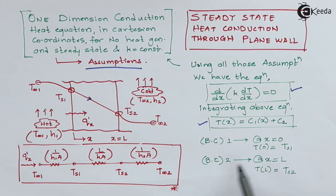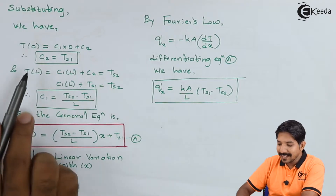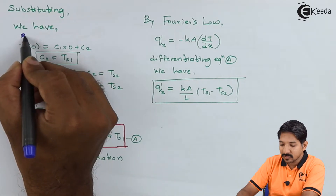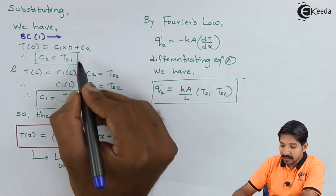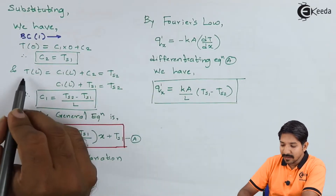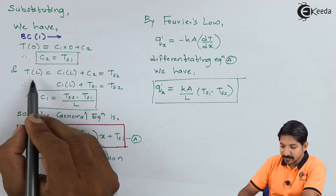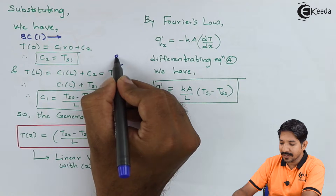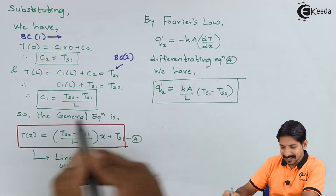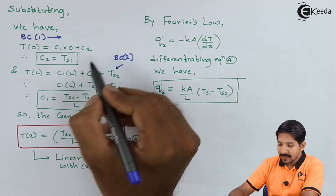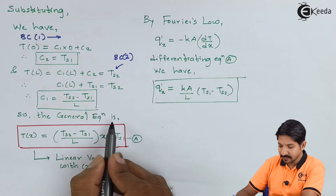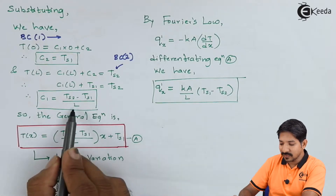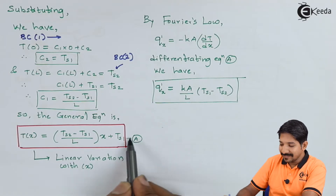I need to put the first and second boundary conditions into the general solution. Substituting boundary condition 1: T(0) = C1·0 + C2, which yields C2 = Ts1. With the second boundary condition: T(L) = C1·L + C2 = Ts2, so C1 = (Ts2 − Ts1) / L. Putting these two constants back into the general solution, my equation becomes T(x) = [(Ts2 − Ts1) / L]·x + Ts1. I am giving this as equation number 1.